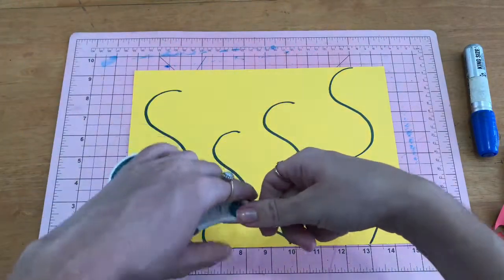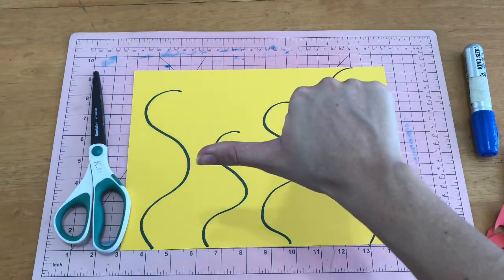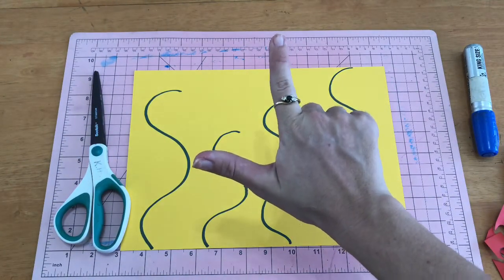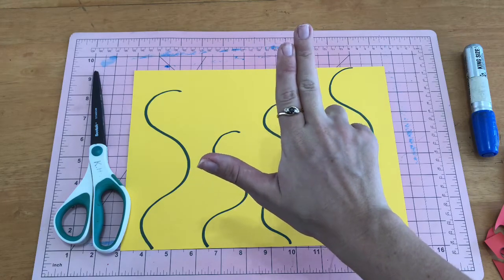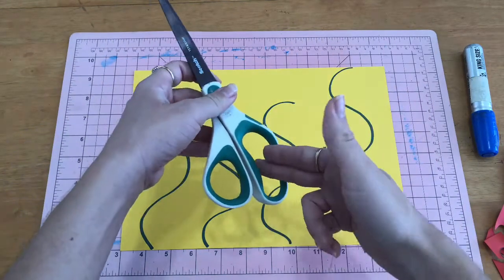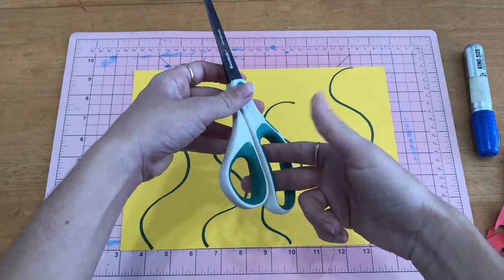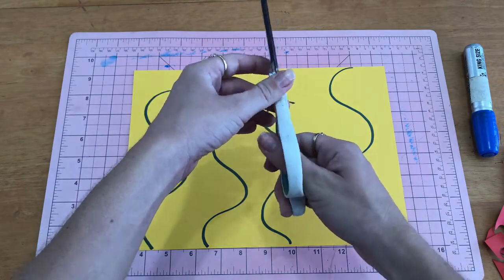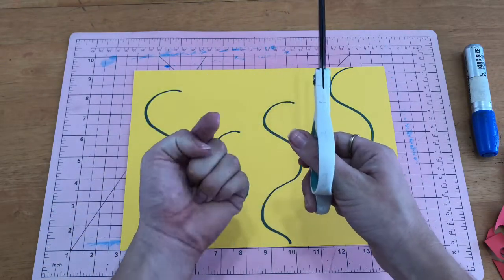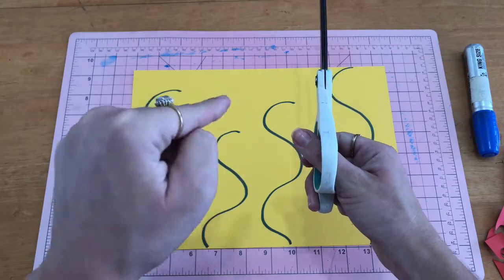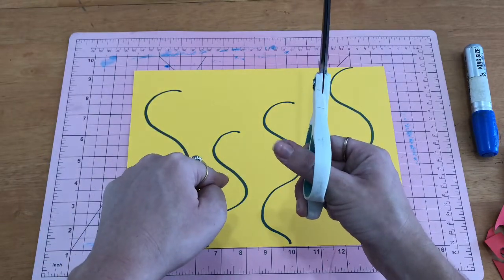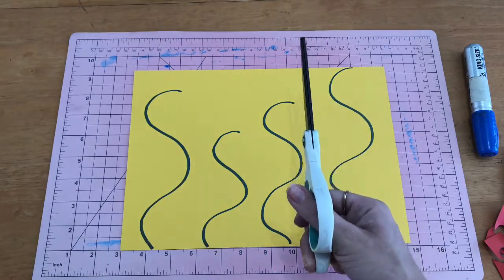Then when you're ready to cut, we need our thumb, pointer finger, and our middle finger for cutting. So we are going to put those two fingers in the bottom space, and the thumb goes on top. Remember, he has to be looking at you. He can't be looking at the ground. Your thumb has to be looking at you.